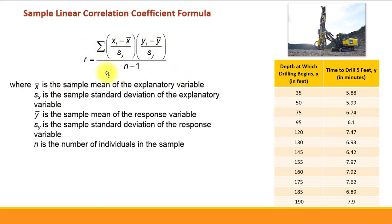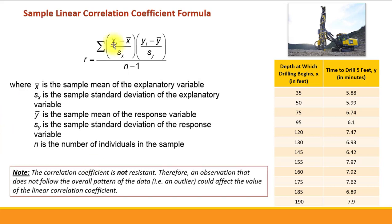One quick note: since all values from the data set participate in the formula, the correlation coefficient is not resistant. This means that extreme observations — outliers that do not follow the overall pattern — can affect its value. So if there are outliers in your data set, it's better to remove them before computing the correlation coefficient.